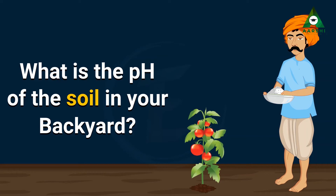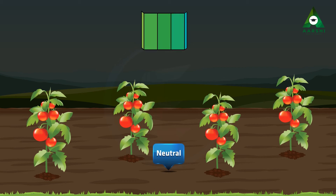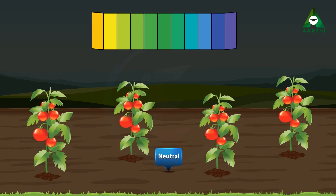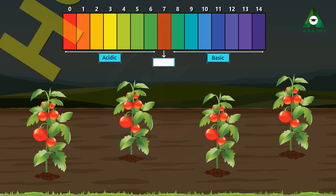What is the pH of the soil in your backyard? Plants grow properly and give proper yield if the soil is neither acidic nor basic, i.e. neutral. This means the pH of the soil should be equal to 7 for healthy growth of plants.